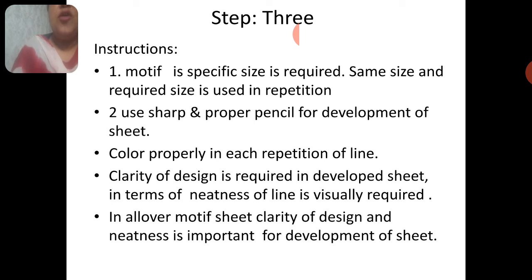Step 3 instructions. Point 1: Motif of a specific size is required; the same size and required size is used in repetition. Point 2: Use a sharp and proper pencil for development of sheet. Point 3: Color properly in each repetition of line. Point 4: Clarity of design is required in the developed sheet in terms of neatness of line, which is visually required.